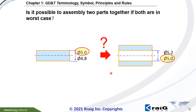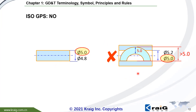If you look at the same drawing according to different standards, you may have different answers. For example, here is the pin and here is the hole. The question is: could we install this pin into the hole? From a size point of view, the maximum size of the pin is 5.0 and the minimum size of the hole is 5.0, so from size point of view it looks okay. But if you consider different standards, then you have different answers.